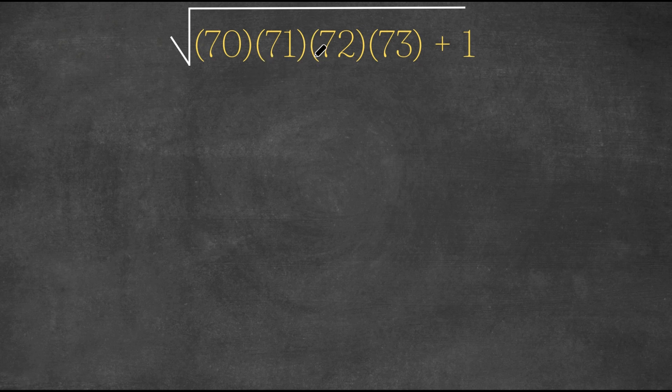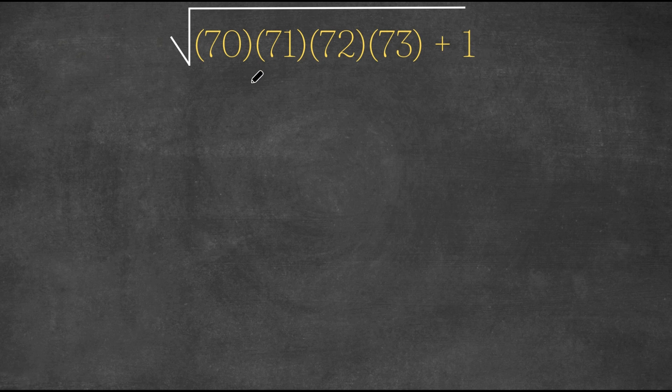We have the square root of 70 times 71 times 72 times 73 plus 1. So what I'm first going to do is set 70 as x.